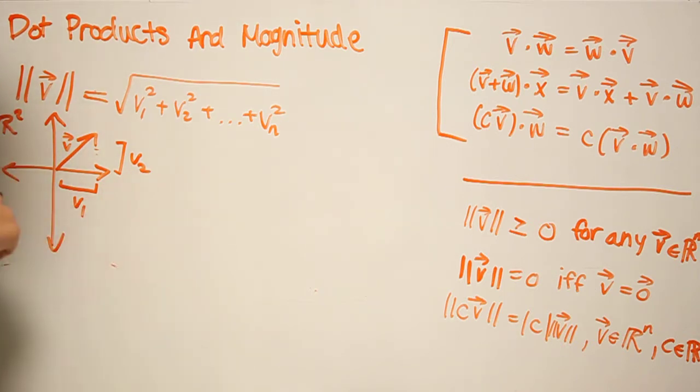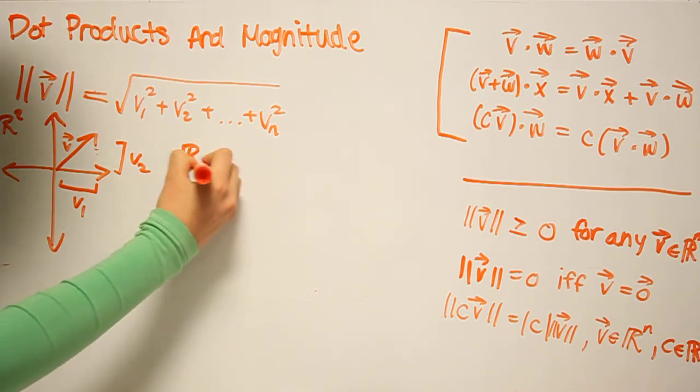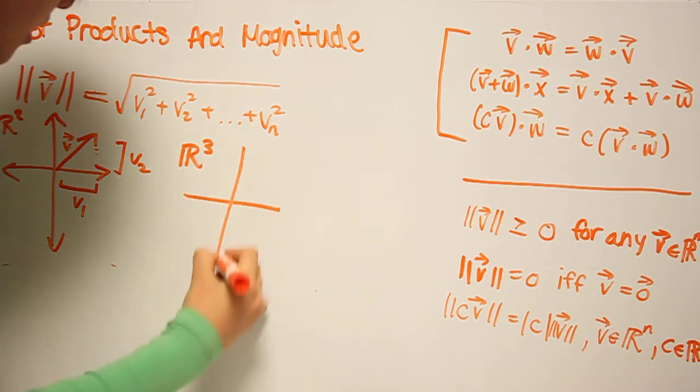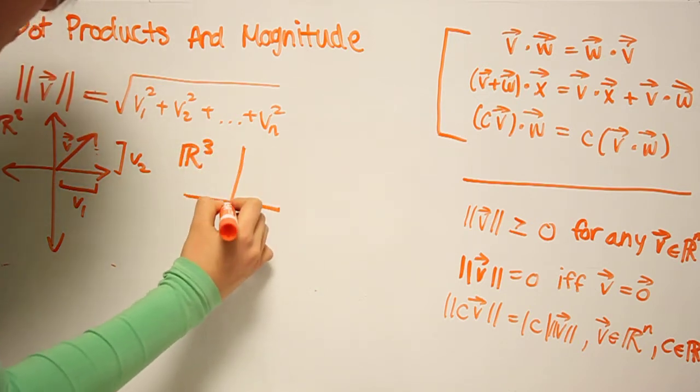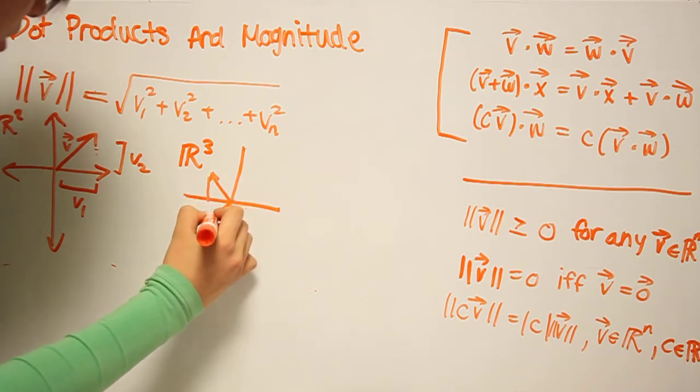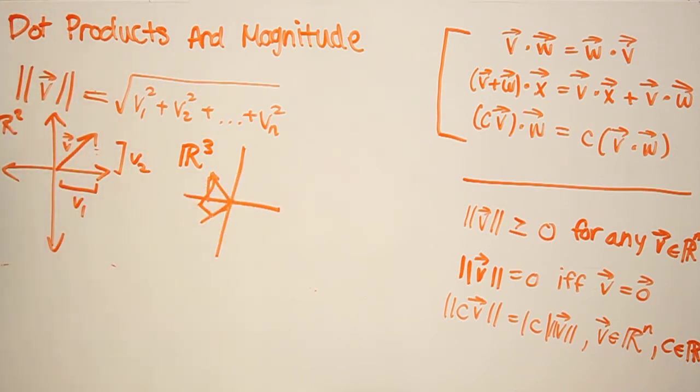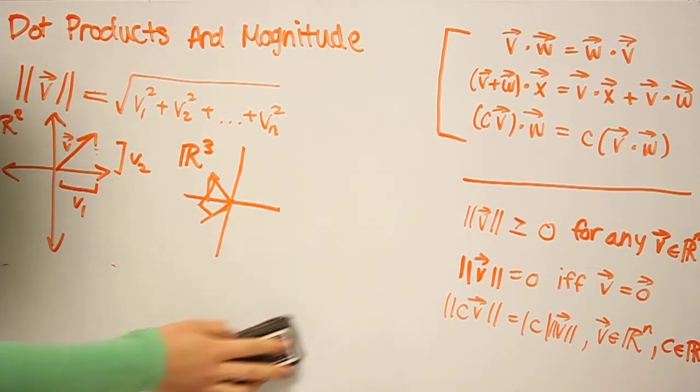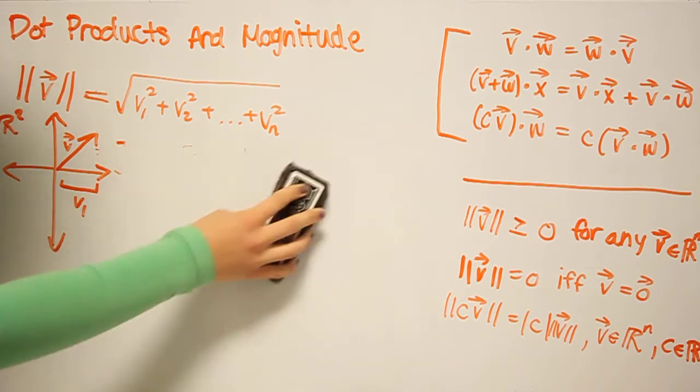And you can see the same thing is true for R3. You can apply the Pythagorean theorem into three-dimensional space. So you would have the three components X, Y, and Z. And I apologize for my poor drawing, but go ahead and check it out and make sure it works for yourself.